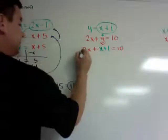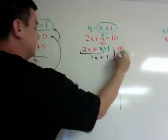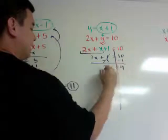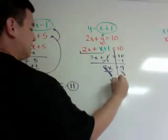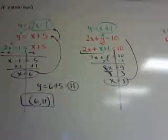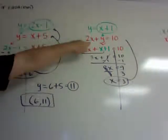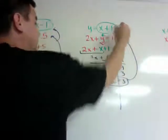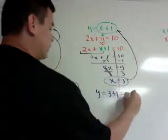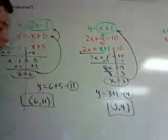I can combine my like terms since they're on the same side of the equal sign, and I get 3x plus 1 is equal to 10. I'm going to minus 1 from both sides and get 3x is equal to 9, divide by 3, and x is equal to 3. Now I can take it into either one of these, and I can see that the first one is going to be easier because I'm trying to find y. If I put the 3 into the first equation, I get y is equal to 3 plus 1, which is equal to 4. Make sure you put it into coordinate form: 3 comma 4.